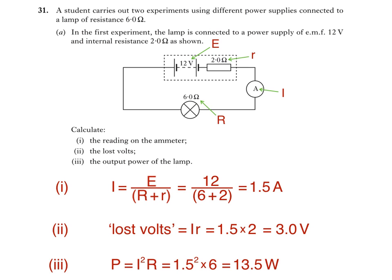Note that the data in the question — the resistance of the lamp, the internal resistance of the power supply, and its EMF — are written to two significant figures. We can then write our final answer to two significant figures also, giving us an output power of 14 watts.